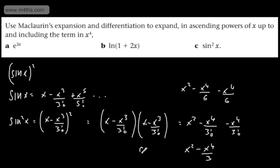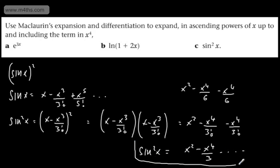This tidies up to x² − x⁴/3. So sin²x ≈ x² − x⁴/3.